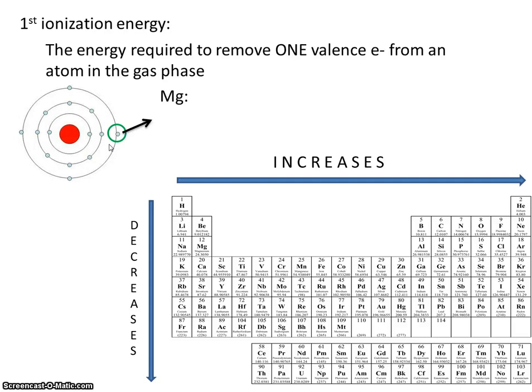Let's look at the electron configuration for magnesium. 1s2 2s2 2p6 3s2. So the first ionization energy would be the amount of energy required to remove just one of those electrons in the 3s.